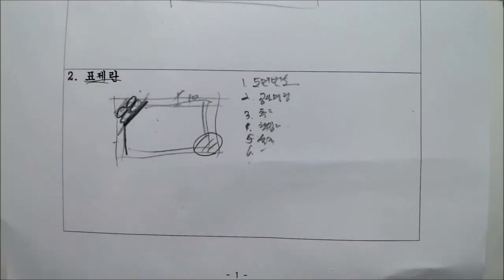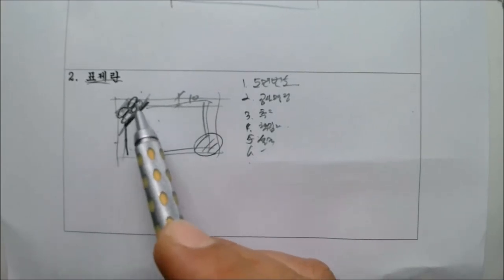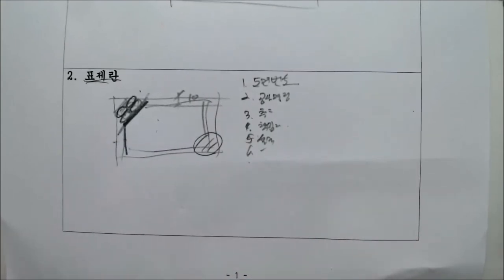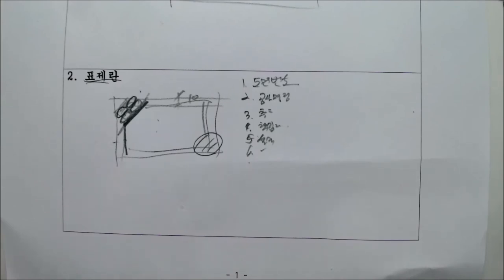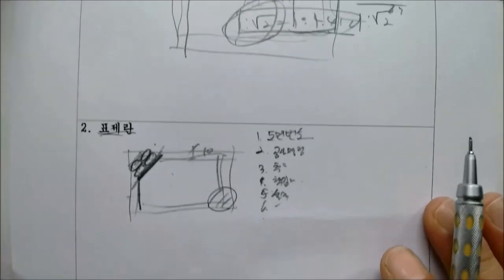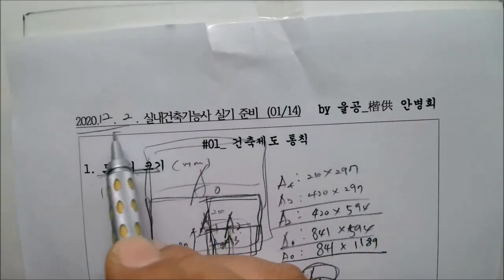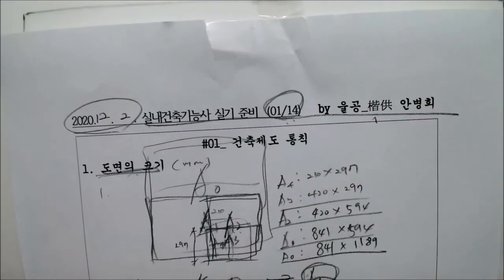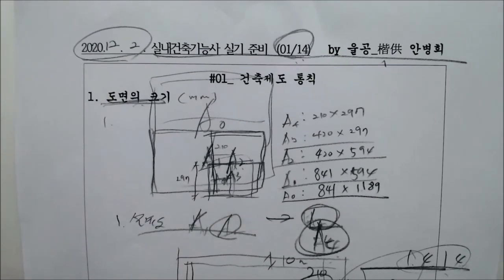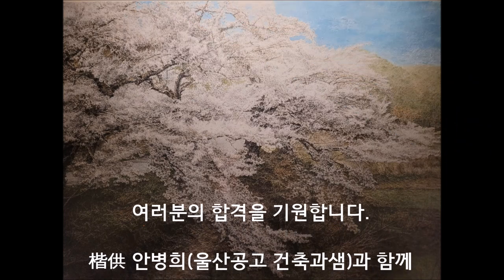표제란은 도면의 우측 하단에 두는 게 일반적이지만, 보통 시험에서는 여기에 도장을 찍어줍니다. 수험번호, 성명, 연장시간, 감독 확인. 그리고 원래 표제 안에는 도면번호, 공사가 뭔지, 책임자가 누군지, 설계는 누가 했는지, 도면은 언제 만들어졌는지, 작성 분류 번호 이런 식으로 합니다. 실내건축기능사 실기 준비, 2020년 12월 2일 첫 번째 시간, 14번 시간 중에 첫 번째 시간. 감사합니다. Thank you.